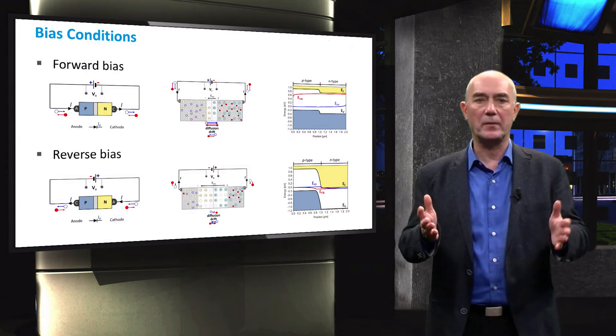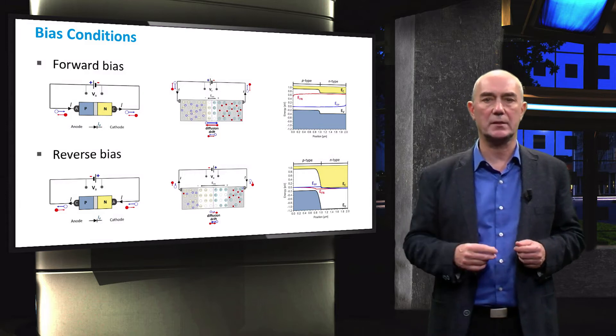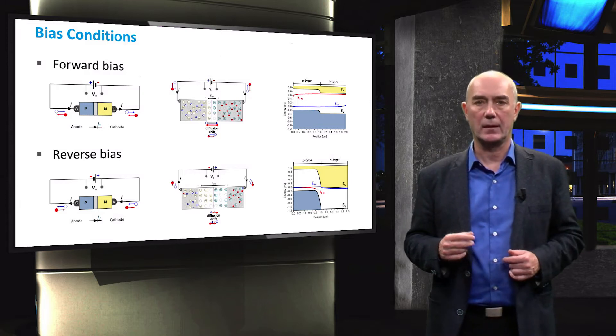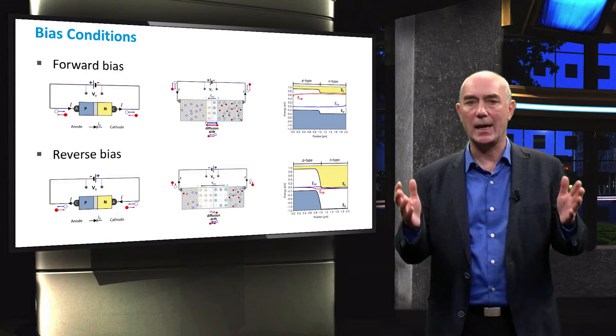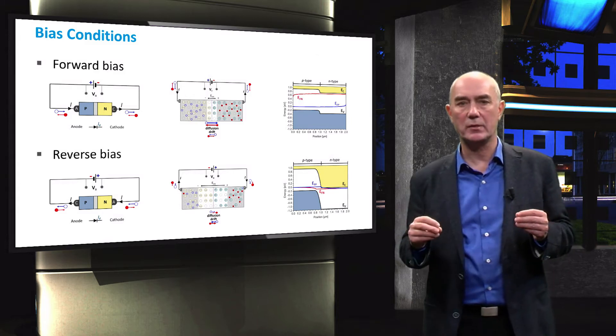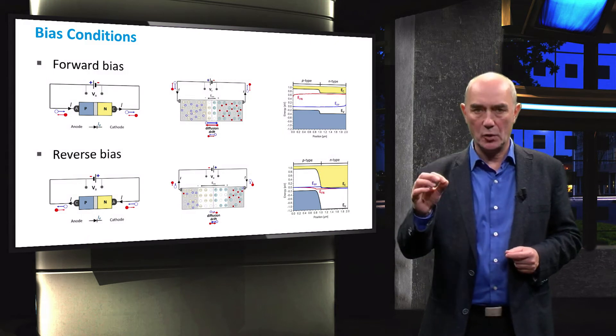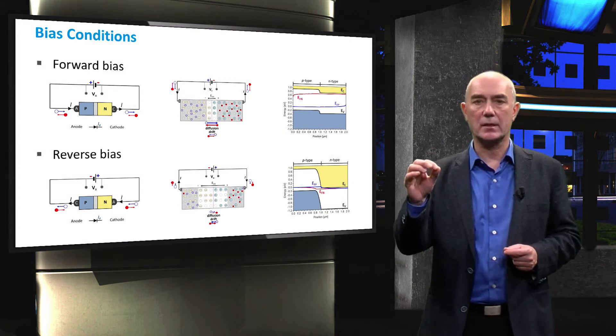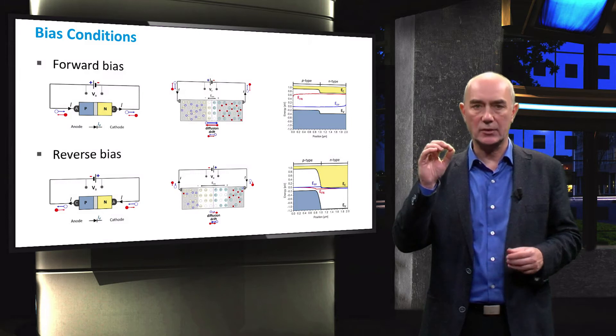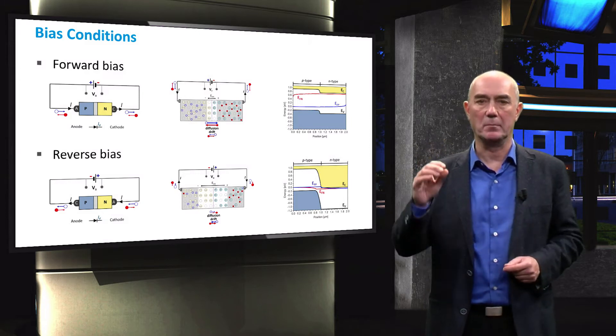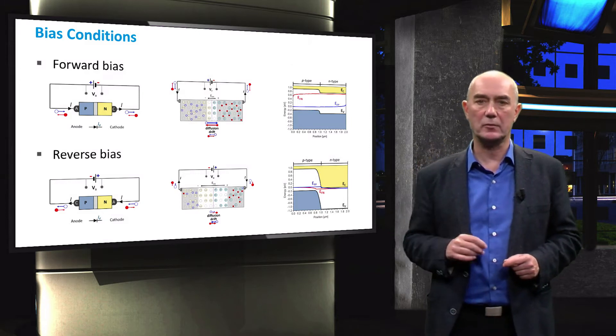This can be seen by the profile of the quasi Fermi levels in the band diagram, that do indeed slightly change from the P-type region into the N-type region. The slope and the area between the quasi Fermi levels is an indication of the direction and amount of current flowing through the diode.